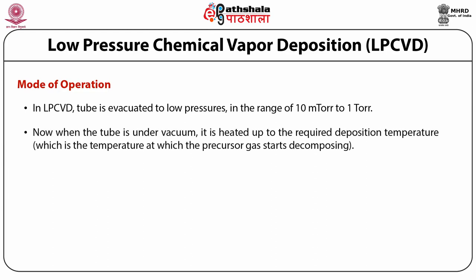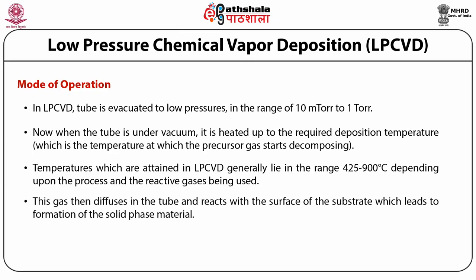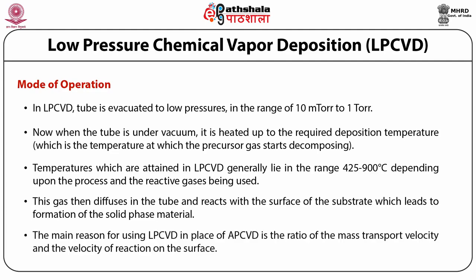In LPCVD, the tube is evacuated to low pressures in the range of 10 millitorr to 1 torr. When the tube is under vacuum, it is heated up to the required deposition temperatures, which generally lie in the range of 425 to 900 degrees Celsius, depending upon the process and the reactive gases being used. After attaining the desired temperature, gas is inserted into the tube, which then diffuses in the tube and reacts with the surface of the substrate, leading to the formation of solid phase material.